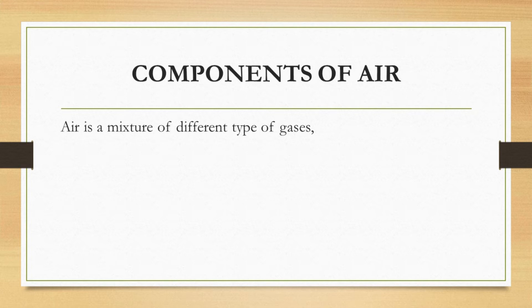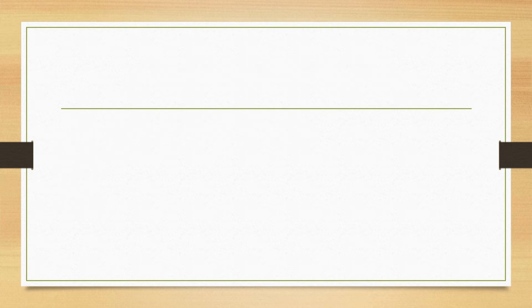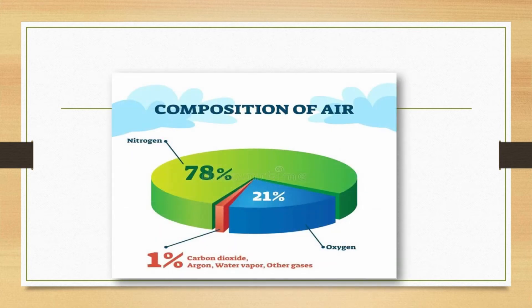Air is a mixture of different types of gases, water vapor, dust, and smoke. There are mainly three types of gases present in the air: 78% of nitrogen, 21% of oxygen, and 1% of carbon dioxide. In addition to this, air contains water vapor and other gases like argon. Now, we can discuss more about these three gases — nitrogen, oxygen, and carbon dioxide.